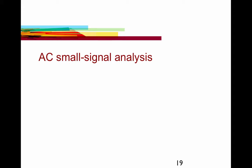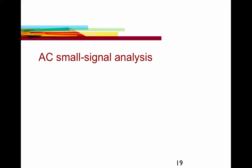Let's get started. In these slides, we're going to review AC small signal analysis. In the previous video, we looked at the DC operating point and calculations on the DC IV characteristic of MOSFETs. Here, we're going to apply those IV characteristics to AC small signal analysis. Before we get started, we want to be clear on some signal naming conventions.